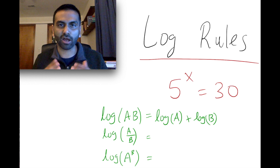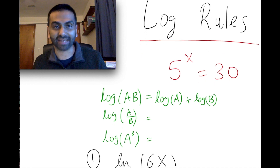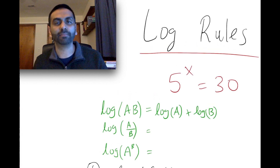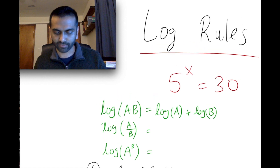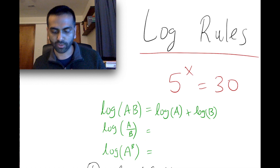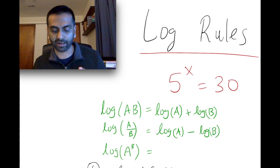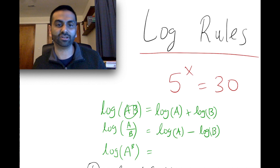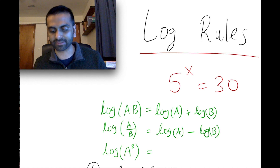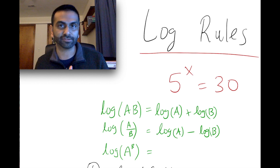Whether it's log or ln, it's the same rules — ln of a times b equals ln of a plus ln of b. If it's division on the inside, log of a over b, that's the same as log of a minus log of b. So the theme is: multiplication on the inside equals addition on the outside, and division on the inside equals subtraction on the outside.